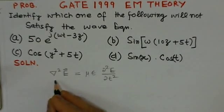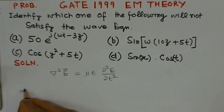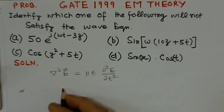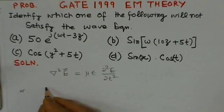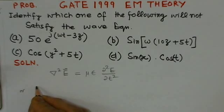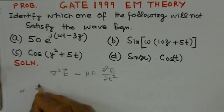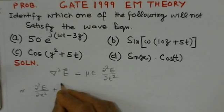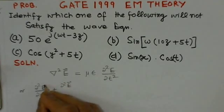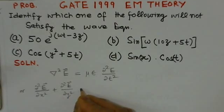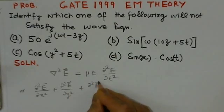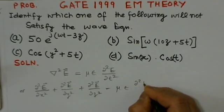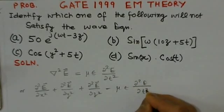Actually, this wave equation could be further written as delta 2 E over delta x square plus delta 2 E over delta y square plus delta 2 E over delta z square equals to mu epsilon delta 2 E over delta t square.